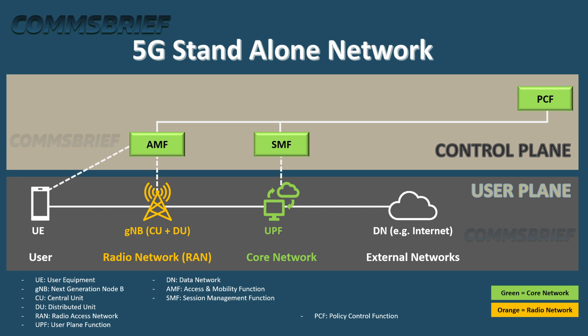Generally, the key nodes representing the 5G core network in most documentation are AMF and UPF. AMF is the Access and Mobility Management Function and UPF is the User Plane Function. It is important to make a distinction between the two planes used in 5G — that'll make it easier to visualize the network architecture a bit better.